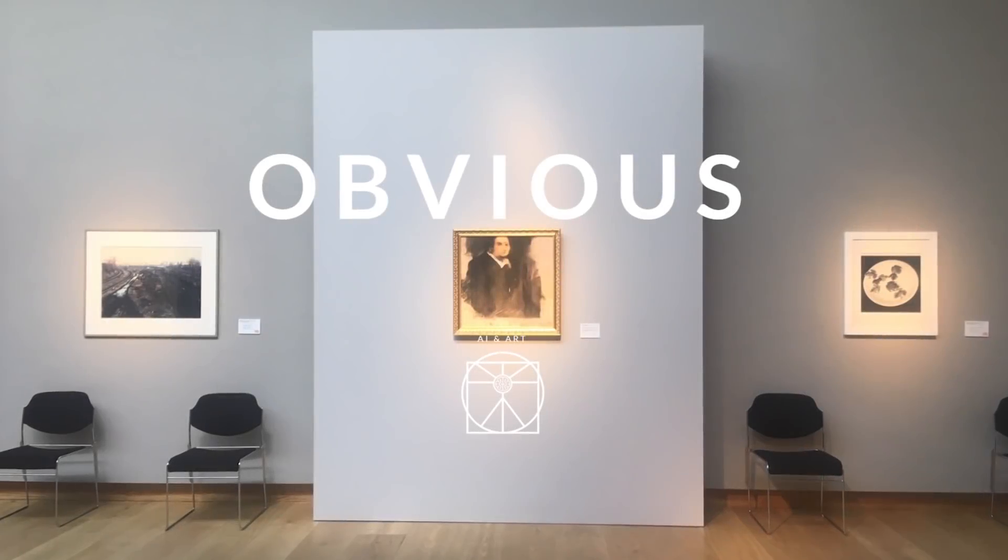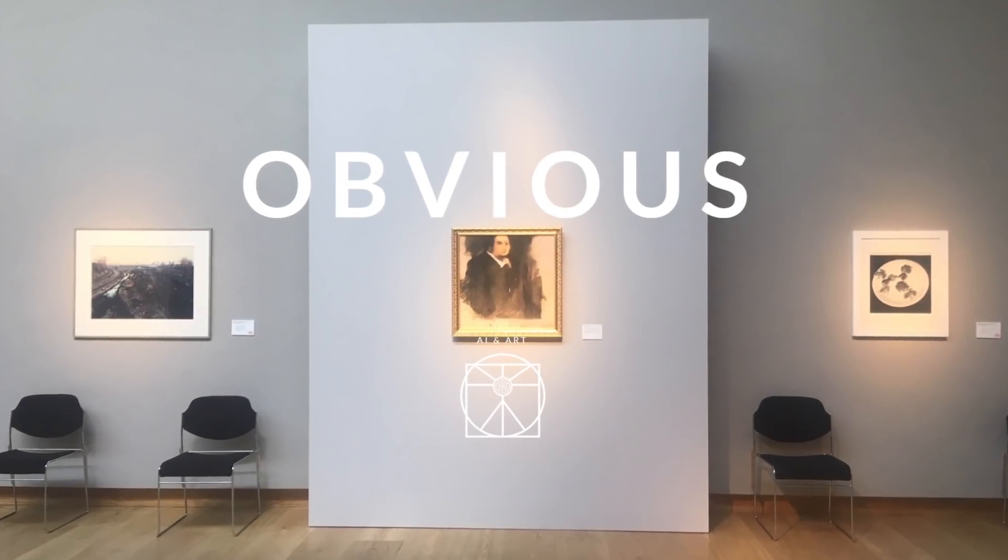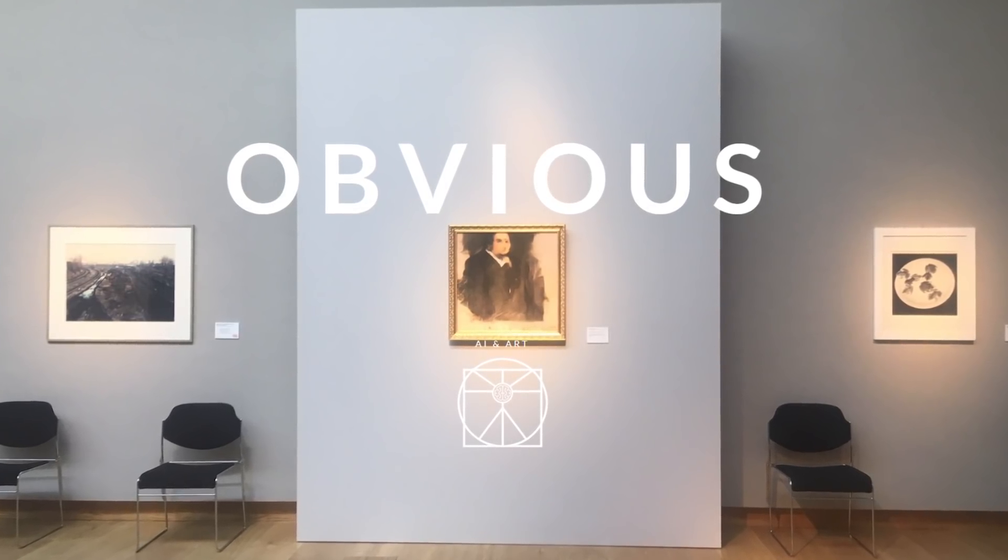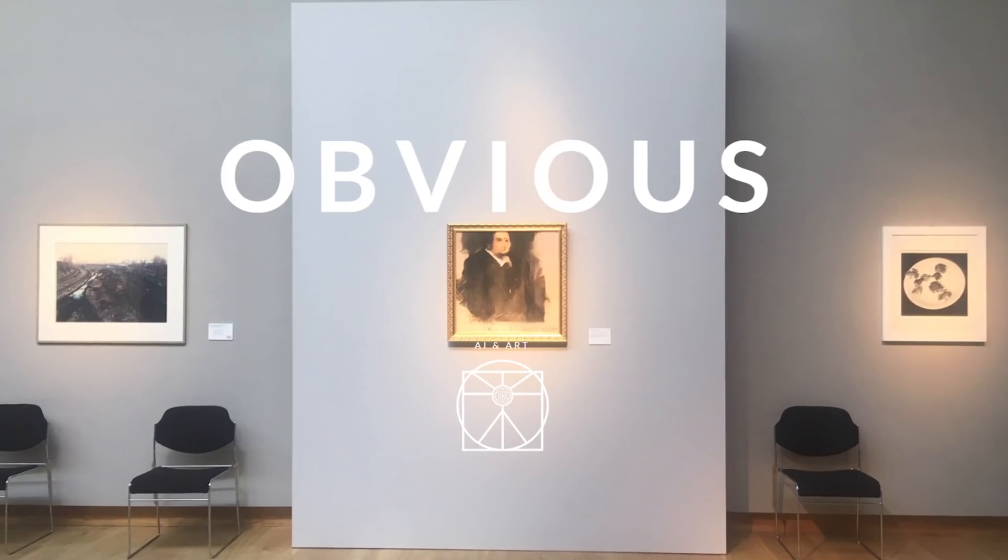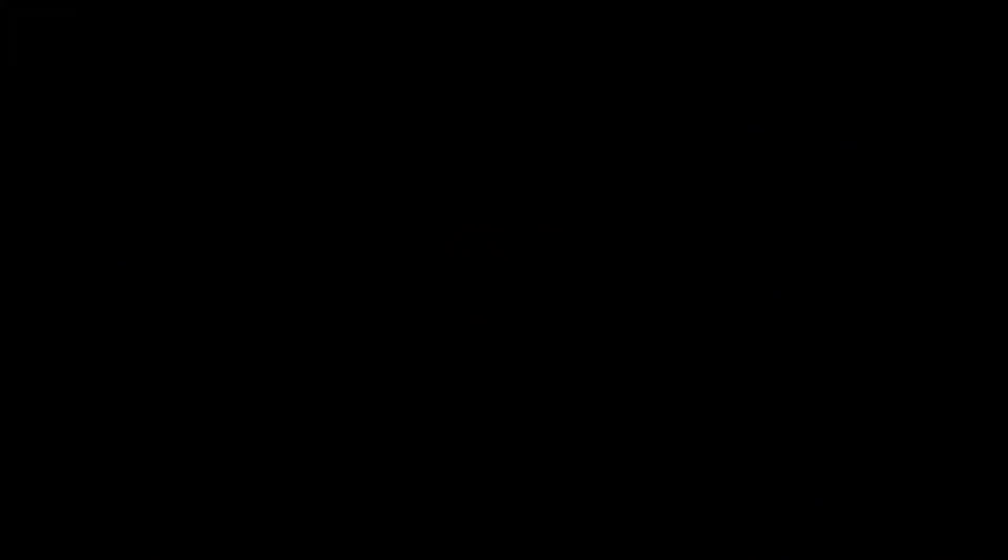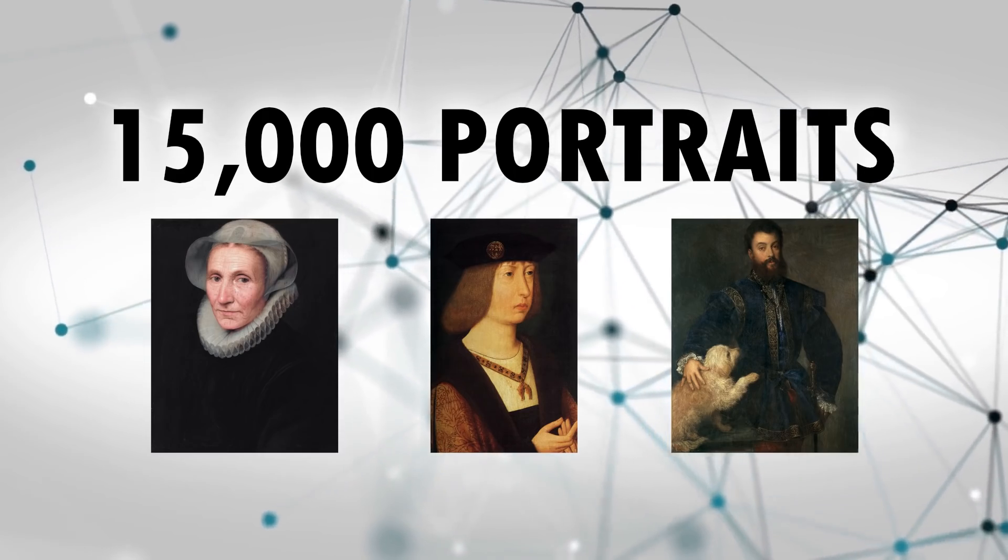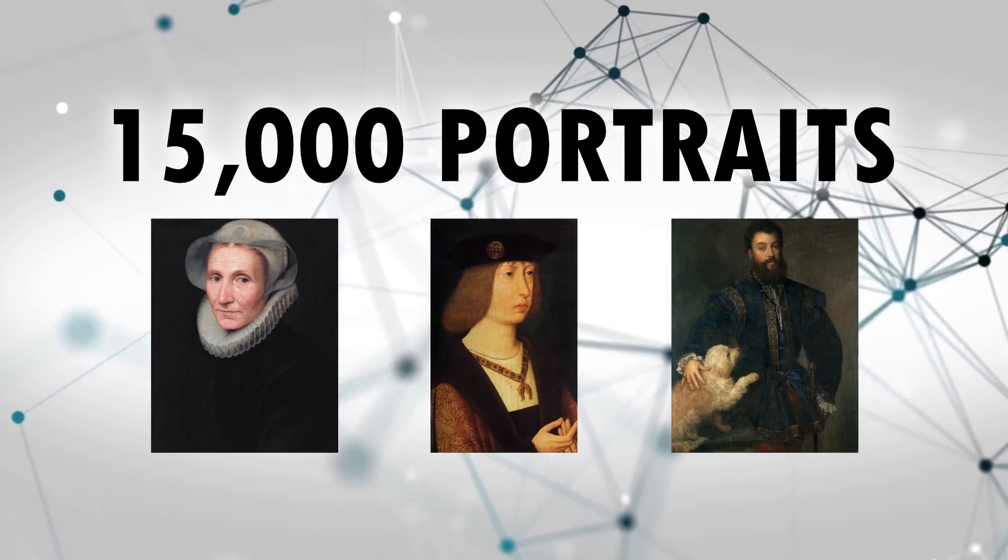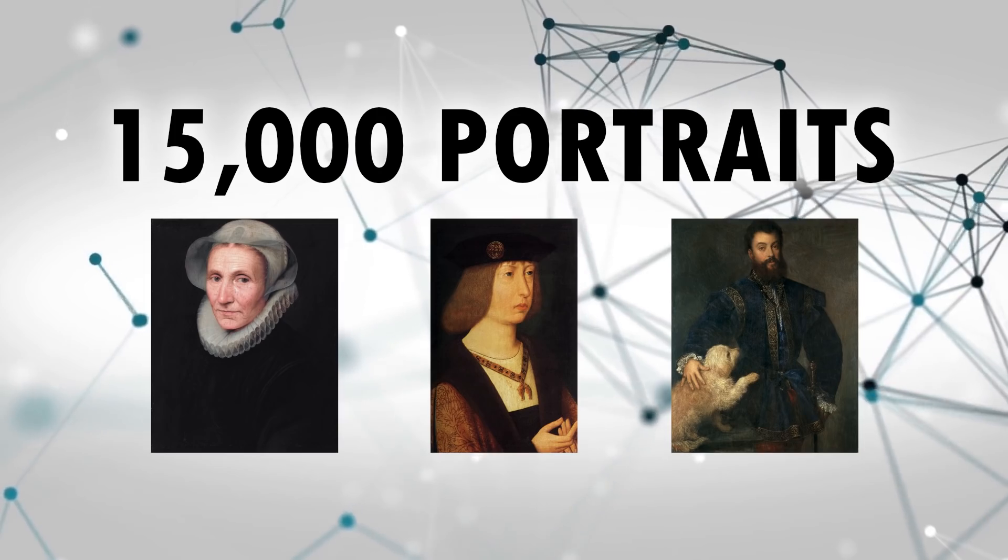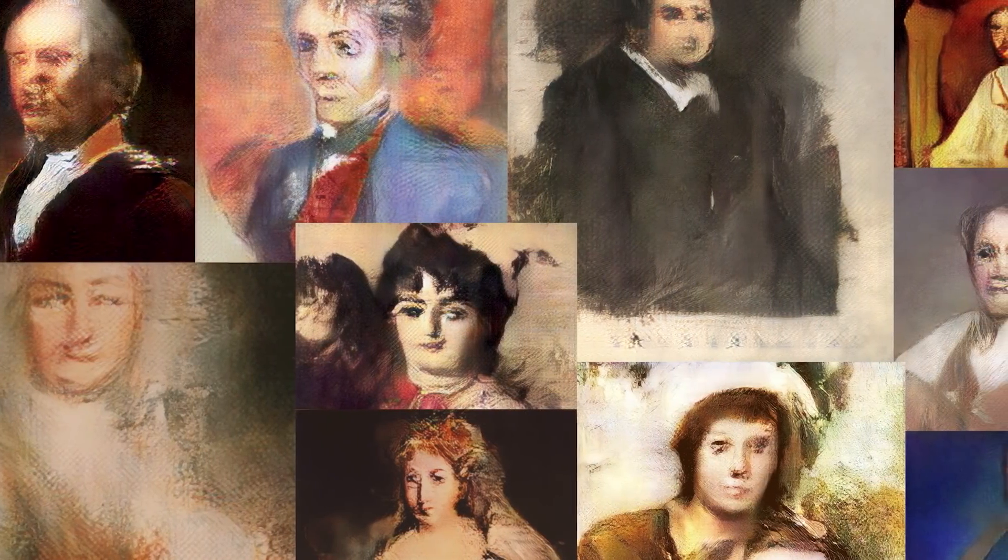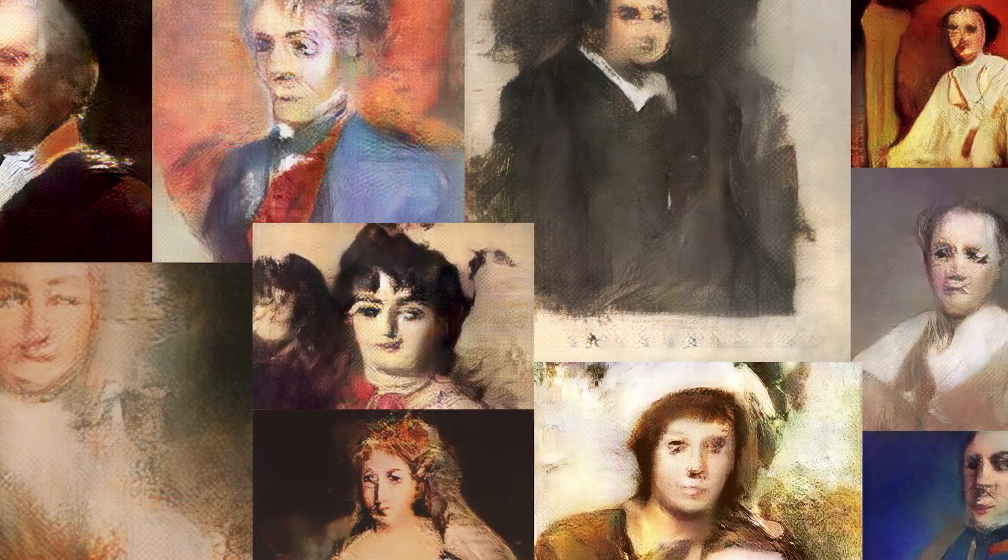Now let's turn our attention to a group of artists and researchers out of Paris called OBVIOUS. OBVIOUS applied GAN algorithms to teach generator networks how to produce images of fine art portraits. The group fed the system a dataset of 15,000 portraits painted between the 14th and 20th century. After the training process, OBVIOUS had the generator network produce an 11-portrait series designed to resemble a fictional family called the Bellamys.